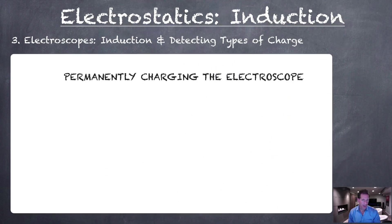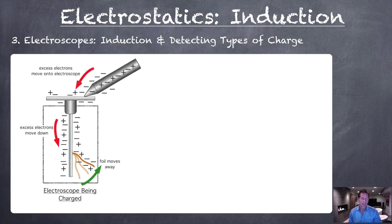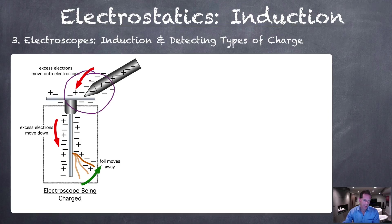Can we permanently charge the electroscope rather than just inducing the charge? To permanently charge it, we'd have to transfer the electrons right onto the electroscope, so we would have to make physical contact. When touching the top plate, any electrons in the amber rod that were in physical contact with the plate would transfer off the amber rod and onto the plate. So now, as you see in the diagram, we have many more negatives than positives, and the electroscope has a negative charge overall.